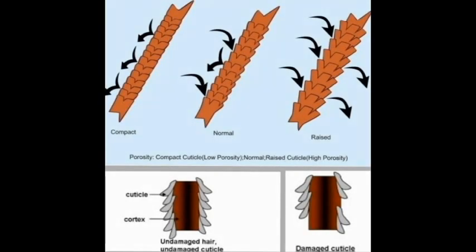If you're already medium to high porosity and the cuticles are already raised, they're going to be breaking off and getting damaged more easily, because the cuticles are already exposed and rub against each other. Damaged hair has higher porosity because damaged hair means damaged cuticles - raised or missing cuticles equals higher porosity. Looking at the diagram, low porosity cuticles lie very flat, normal cuticles are somewhat raised, and high porosity cuticles are very raised. Most people get high porosity through damage, which leaves missing, broken, or permanently raised cuticles.